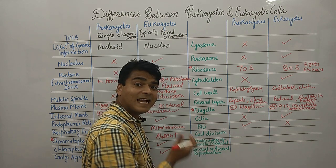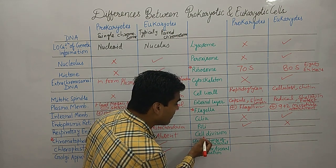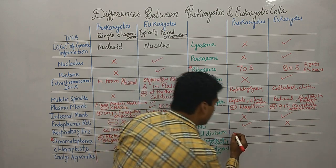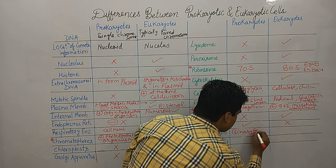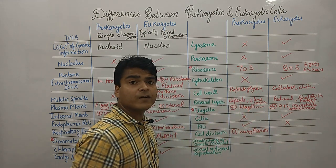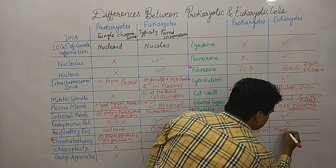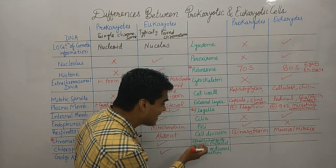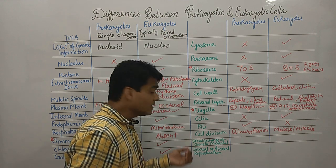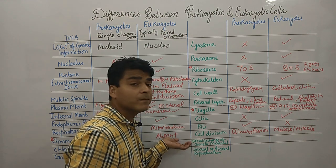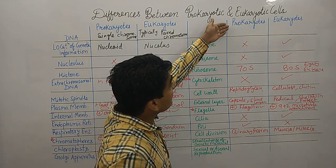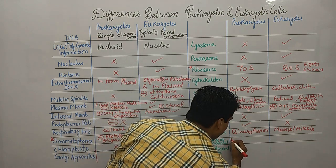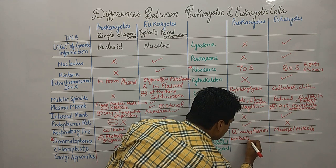Regarding cell division and reproduction: in prokaryotes cell division occurs by binary fission, while in eukaryotes it occurs by mitosis and meiosis. Sexual exchange of genetic material in prokaryotes is not part of reproduction, whereas in eukaryotes it is part of meiosis.